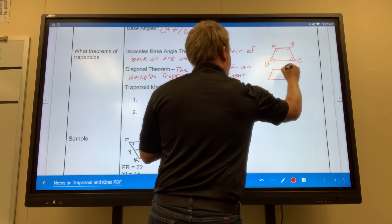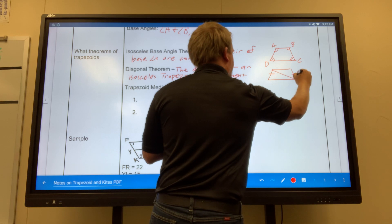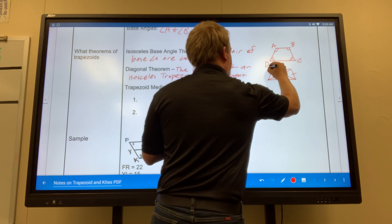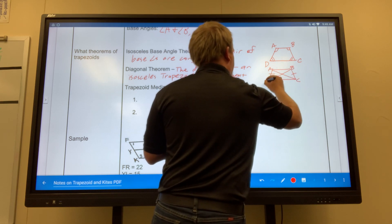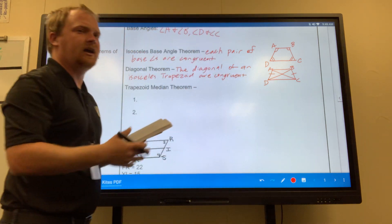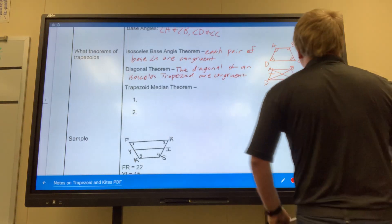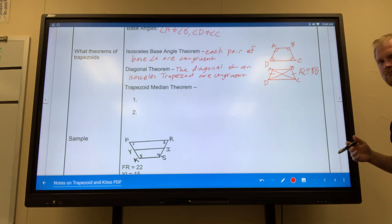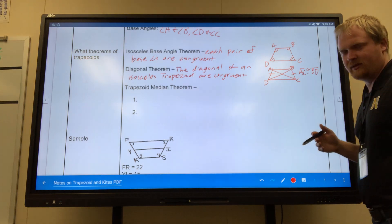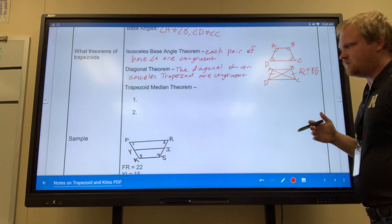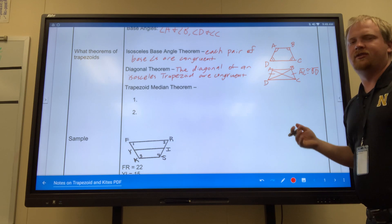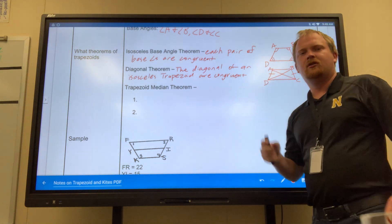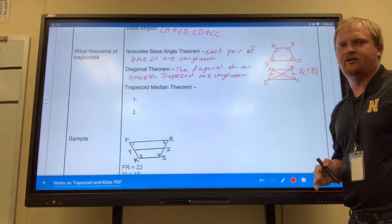So if I make an isosceles trapezoid again, these are congruent. Here's my diagonal lines. So what I could say is that AC, the diagonal of AC, is congruent to the diagonal of BD. That's what that theorem tells us, is that the two diagonal lines are going to be congruent with each other.